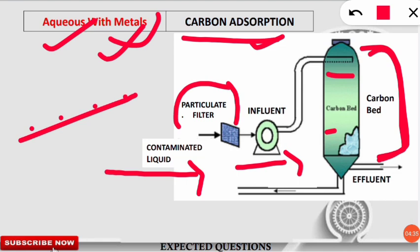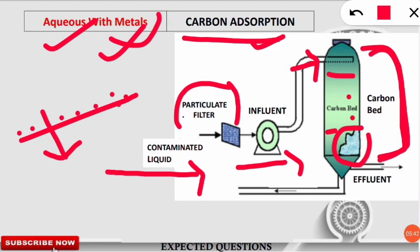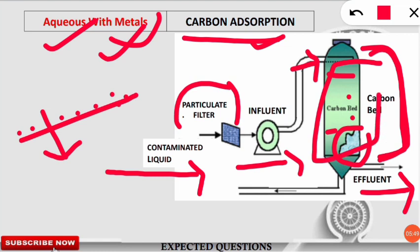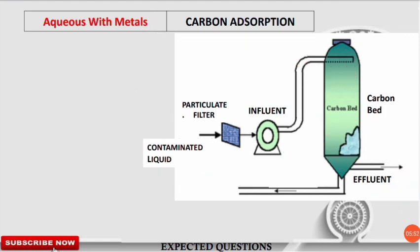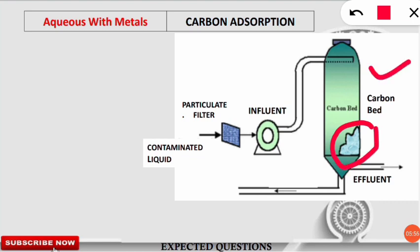Adsorption means particles are sticking on the surface — it is known as adsorption, distinct from absorption where material is absorbed through the surface. Here, when water containing hazardous waste passes inside the carbon bed channel, the carbon bed sticks the hazardous metal compounds onto itself. The purified water — aqueous solution without metals — passes out as effluent. You should remember: the carbon bed adsorbs metal particles, and you need to change or wash the carbon filter regularly to remove all toxic elements.